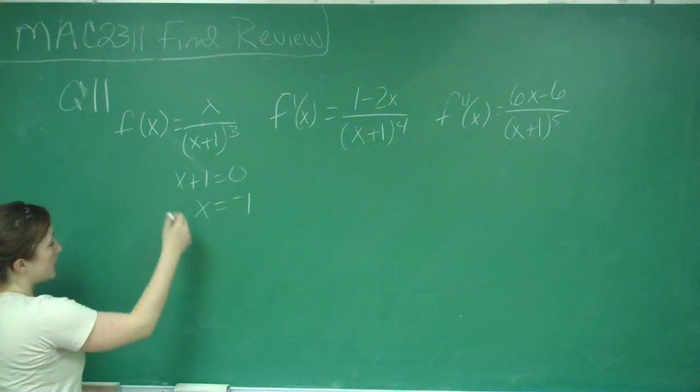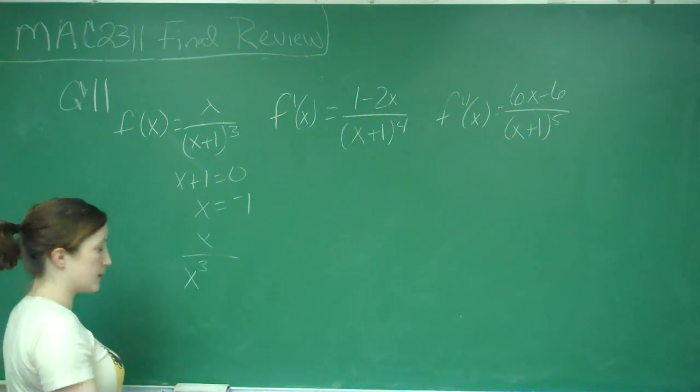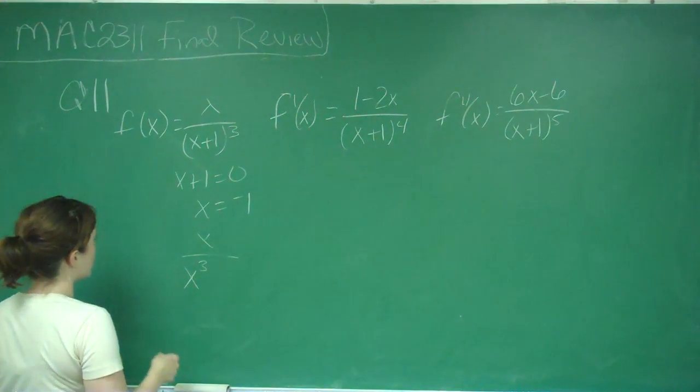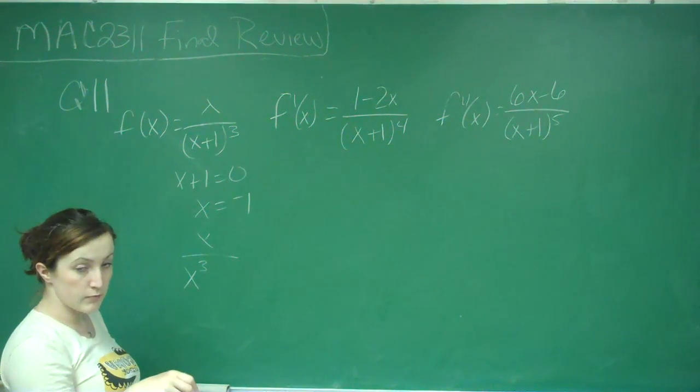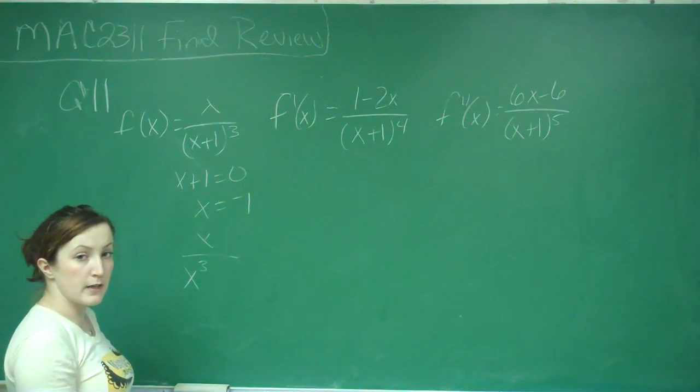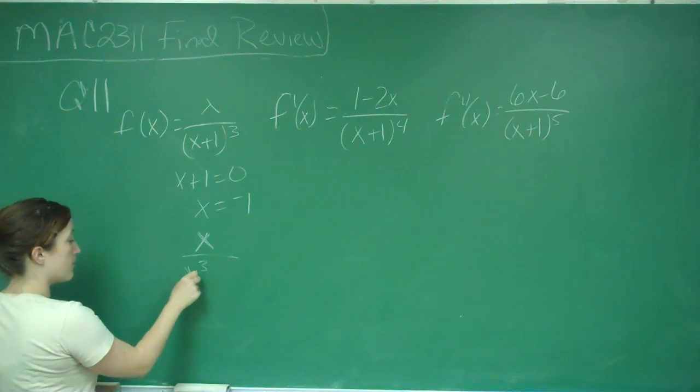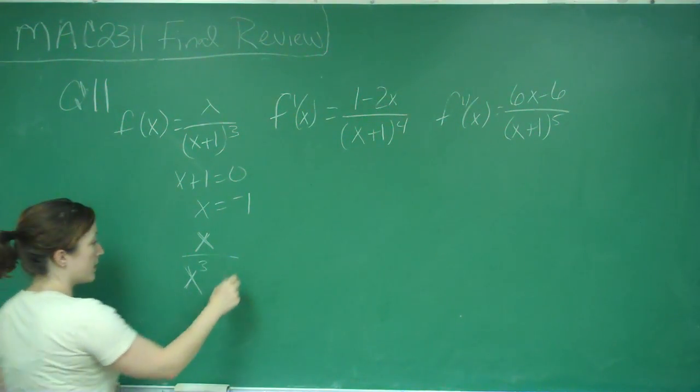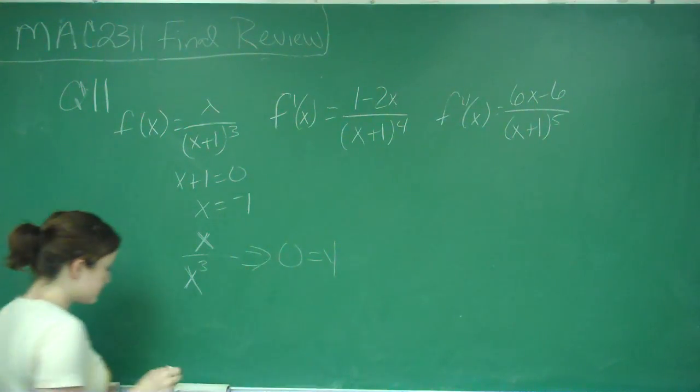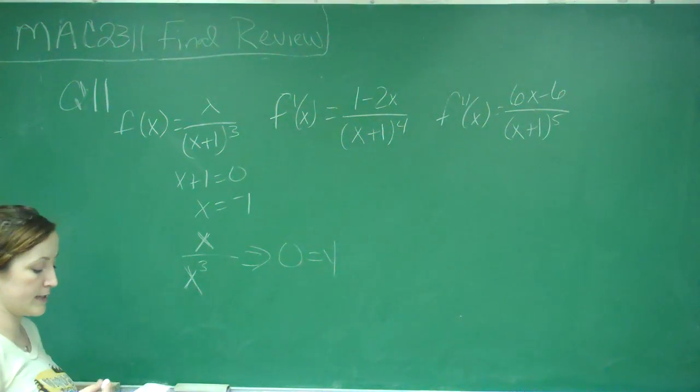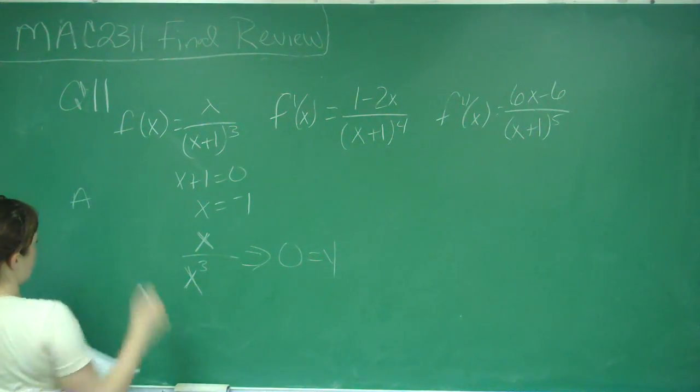And then if I was to FOIL this out, I'd have x over x cubed, or something over x cubed. So if I was looking at just f of x to find my horizontal asymptotes, I'm going to look at my powers, the highest powers on my top and my bottom. And if the bottom power is greater than the top, then I know that this goes to 0. So I do have a vertical asymptote x equals negative 1, horizontal asymptote y equals 0. So we know that A is true.